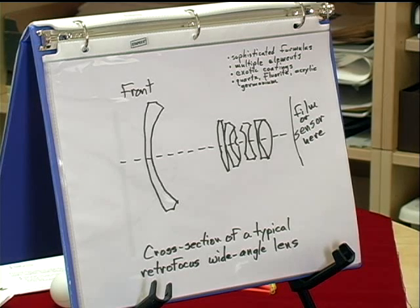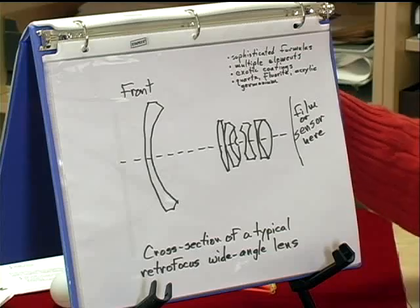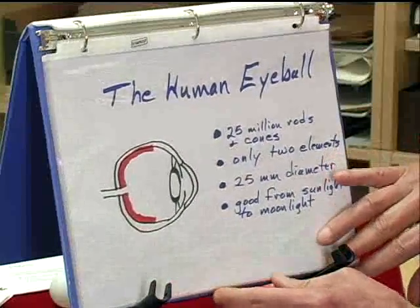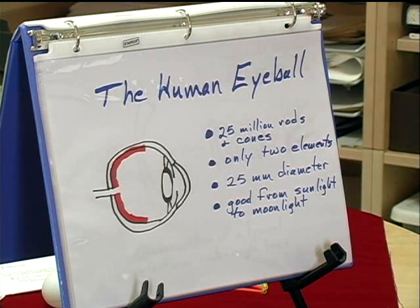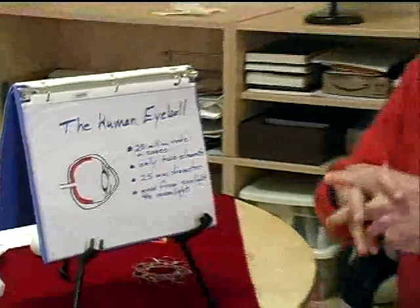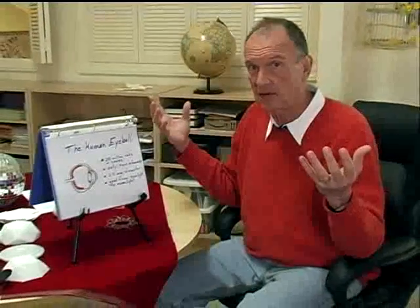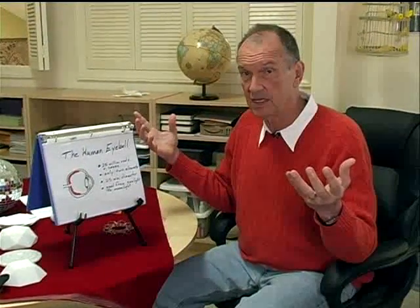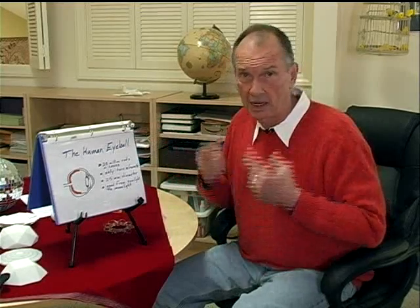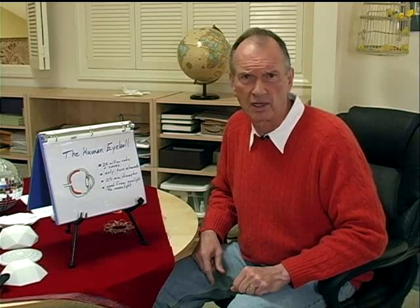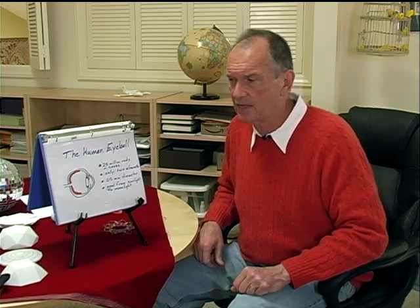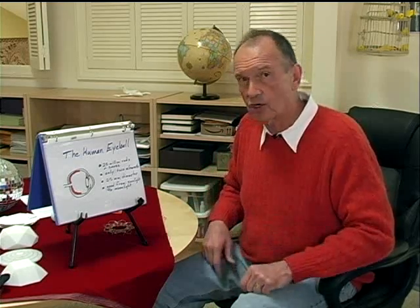Now, why don't we take a second and take a look at the way nature solved these problems. Okay, nature does it this way. Here's a human eyeball. Now, your eye and my eye have about 25 million rods and cones in them. That's about twice the pixel count I have in my very expensive Canon 5D. I don't know if it's legitimate to compare rods and cones to pixels, but my eyeballs do it with one lens and a cornea to protect it. And it resolves more than my very expensive camera. And that's because it's got a curved retina.